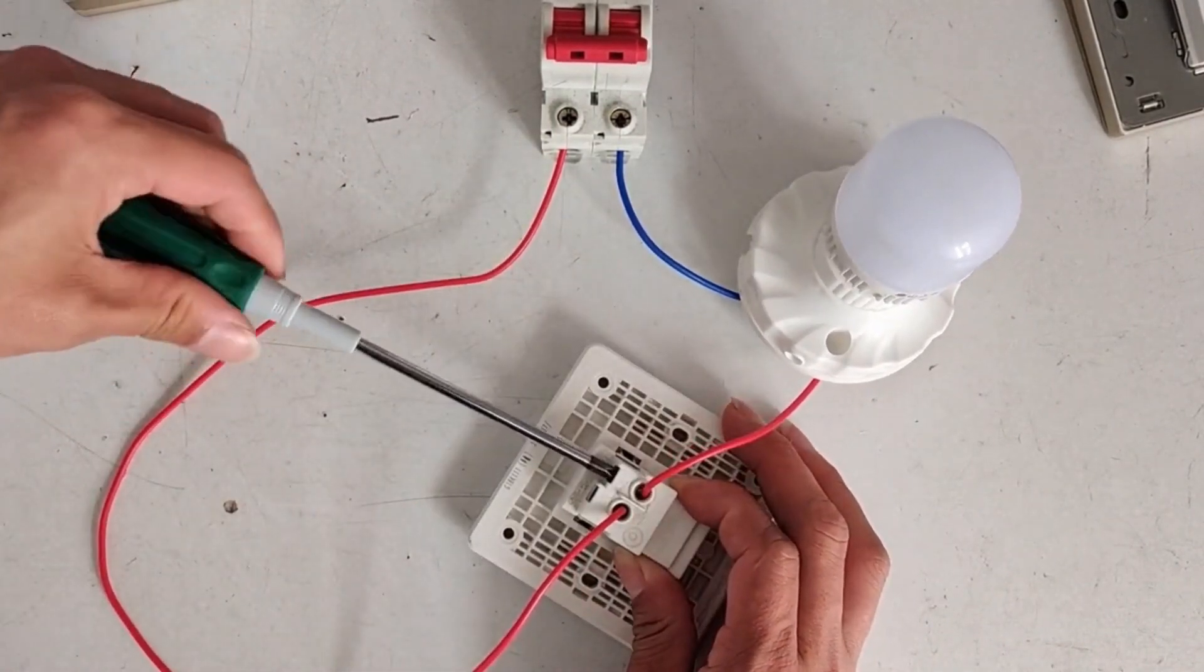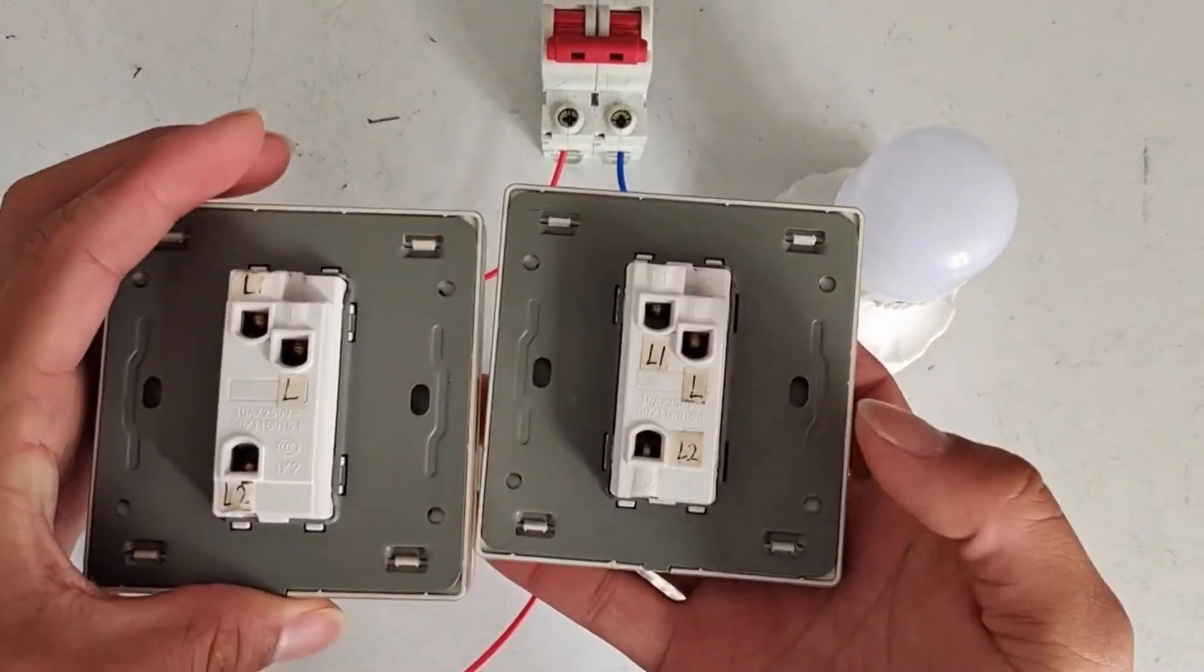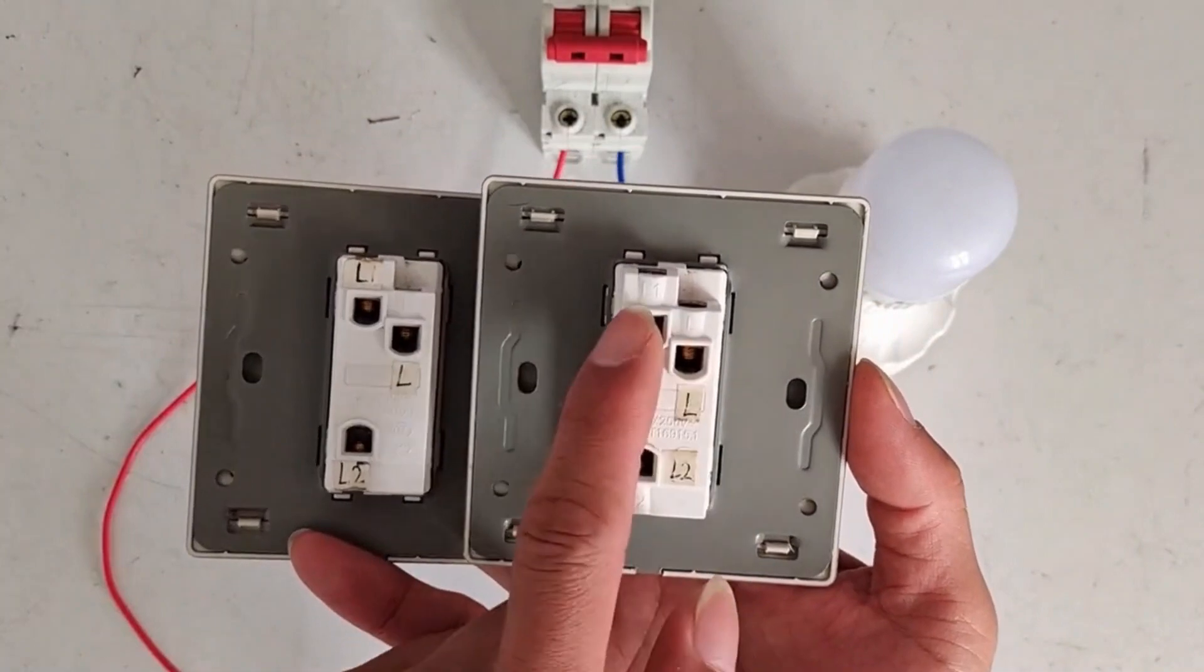How do we change it into a dual control? We first prepare two single open, double control switches. There are L, L1 and L2.